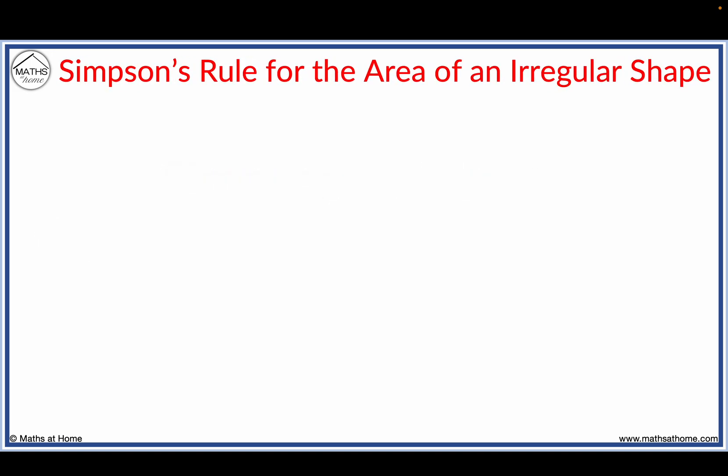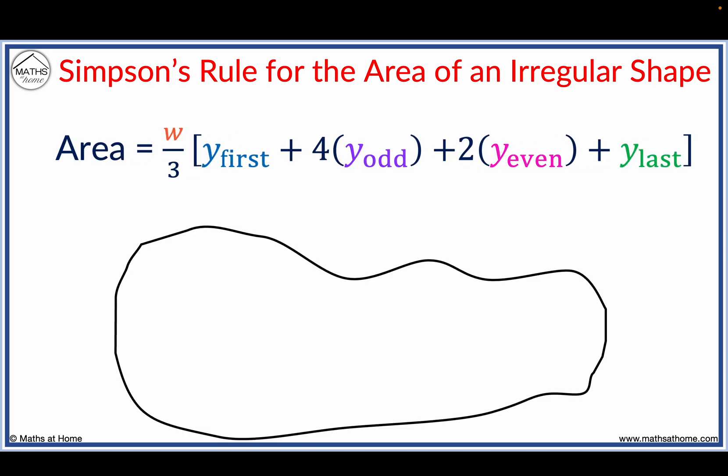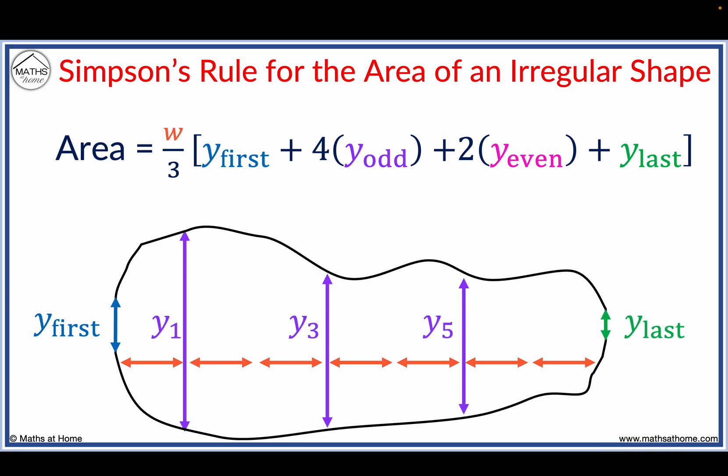Simpson's rule for area is given by the following equation, where W is the width between measurements, Y first is the length of the first measurement, Y last is the length of the last measurement, and Y odd are all the odd measurements, and Y even are all the even measurements.